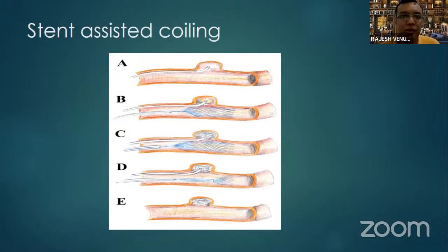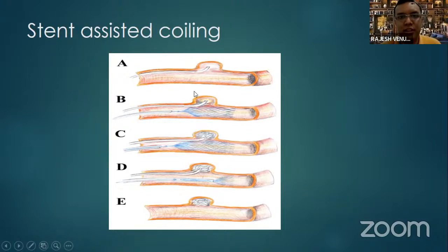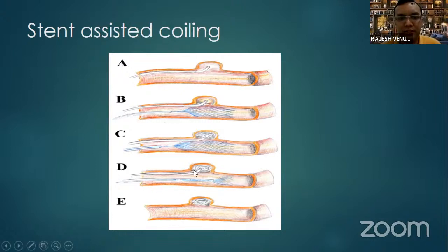This illustration shows stent-assisted coiling: a saccular aneurysm is present in a vessel; a catheter is passed through the vessel neck into the aneurysm sac. A stent is placed across the aneurysm neck to exclude it from the parent vessel. A catheter is then passed through the stent struts into the sac for coiling. Once the sac is thoroughly packed, the stent can remain in situ or be withdrawn. The coils remain completely packed without prolapsing into the vessel.